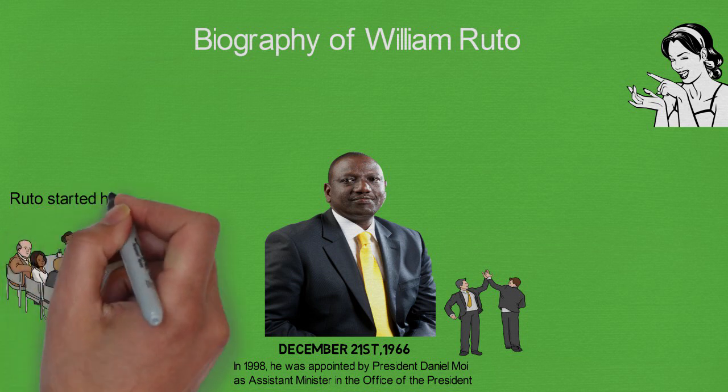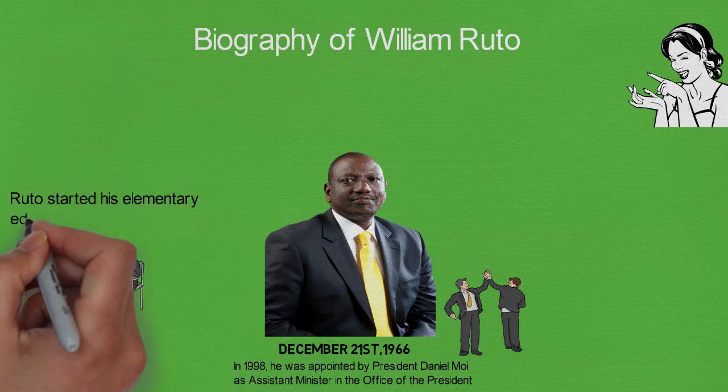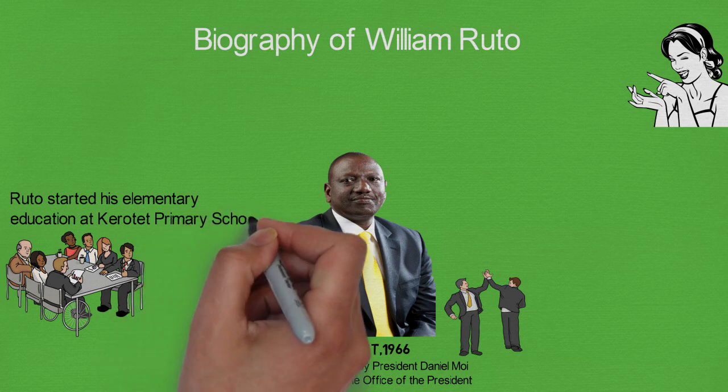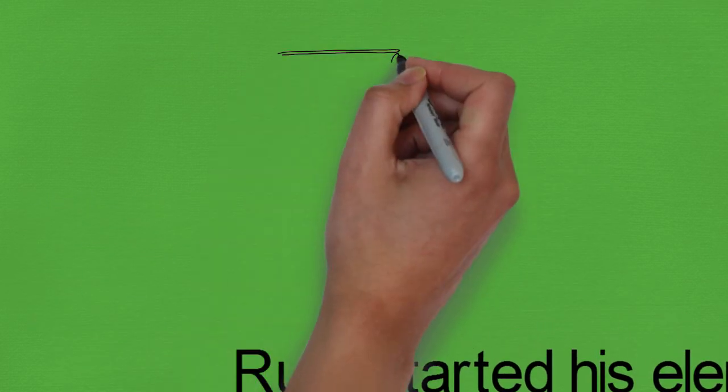Born on December 21, 1966, in Sambut village, to Daniel Chirchir and Sarah Chirchir, Ruto started his elementary education at Karotet Primary School, and after then, Wareng Secondary School,